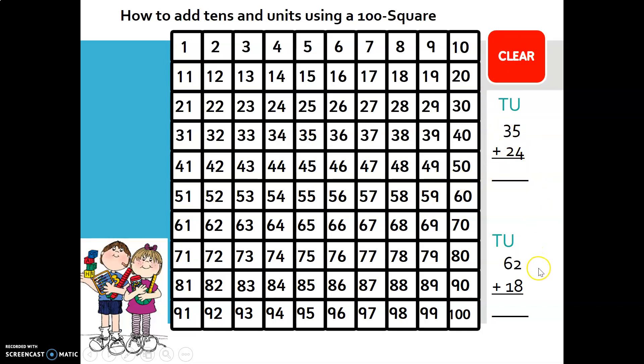Let's look at the second equation: 62 plus 18. So we go to 62. Now we look at the 18 and we split it into 10s and units. We know that there is 1 ten and 8 units.